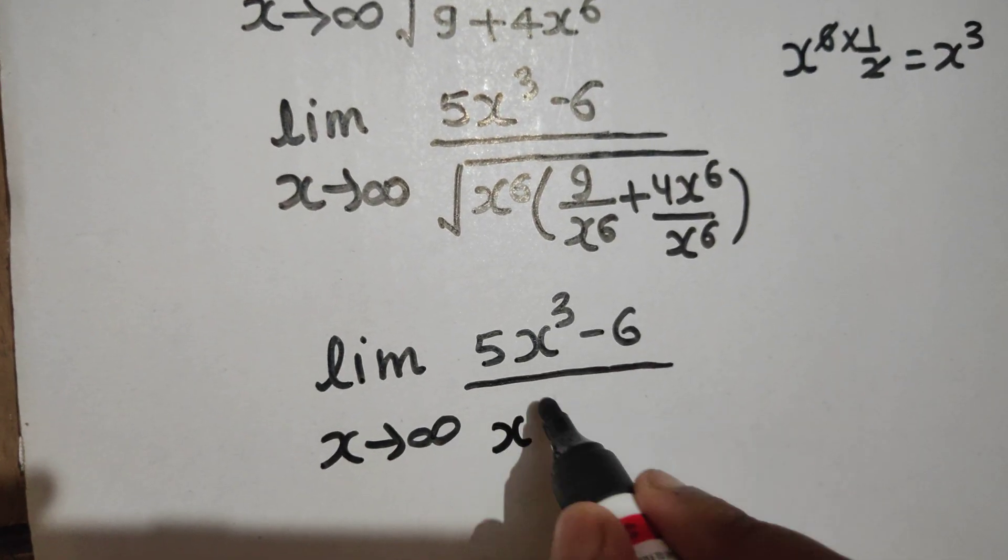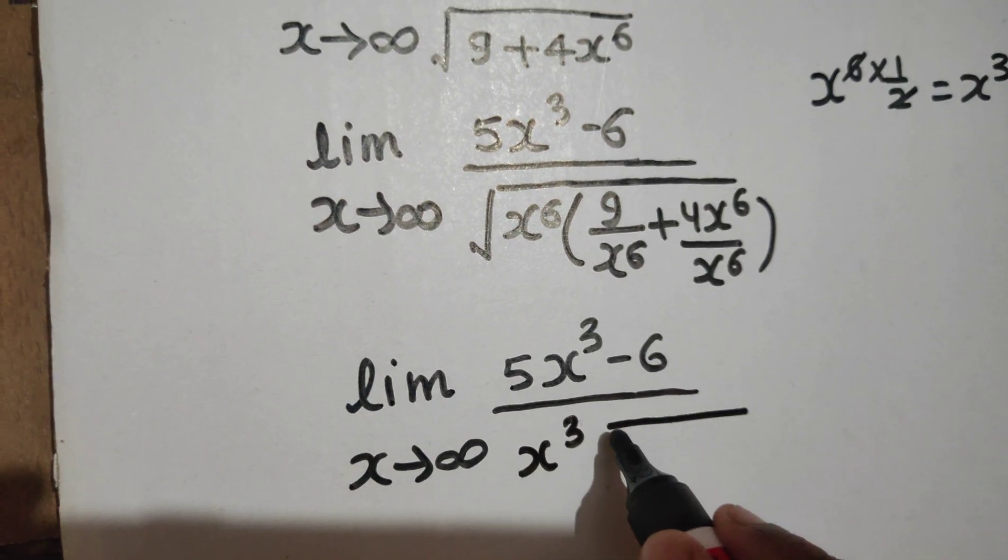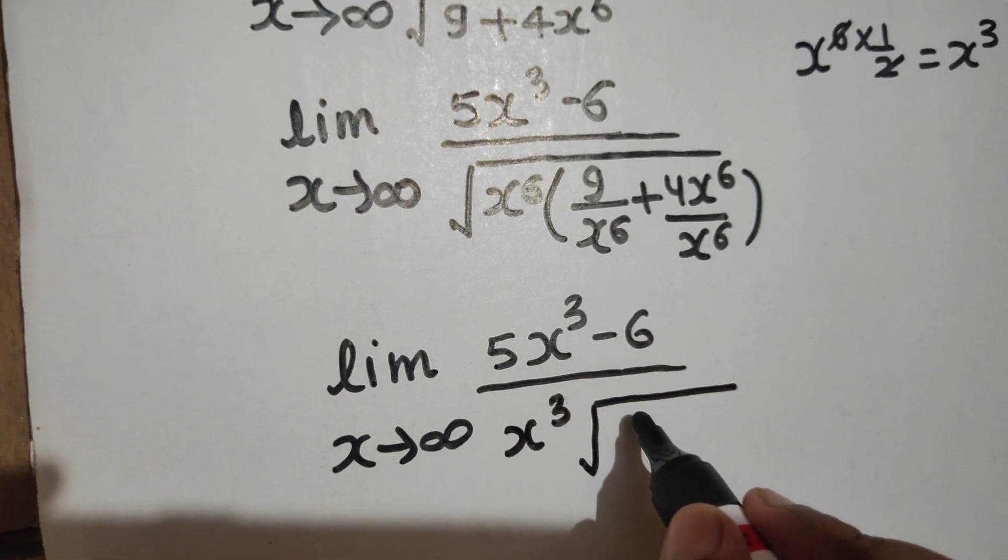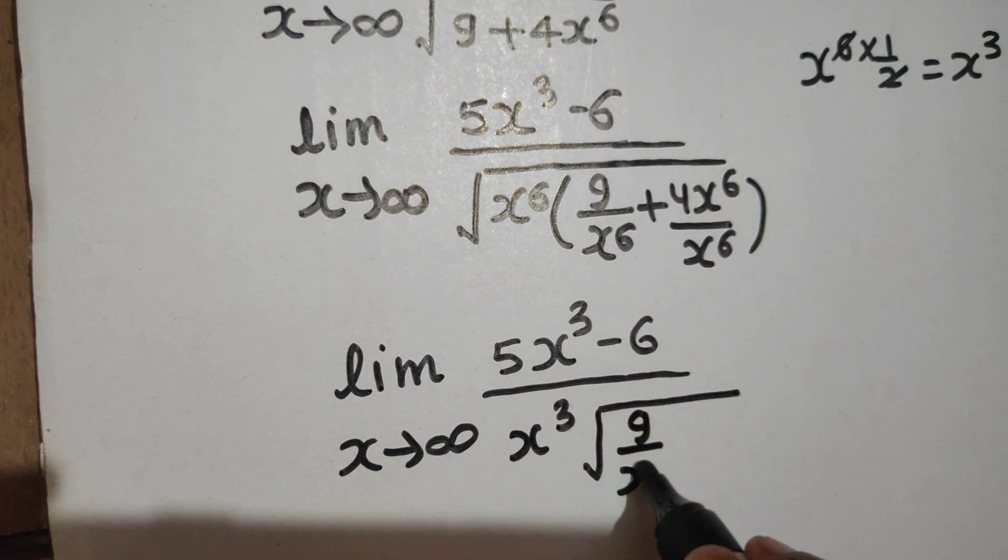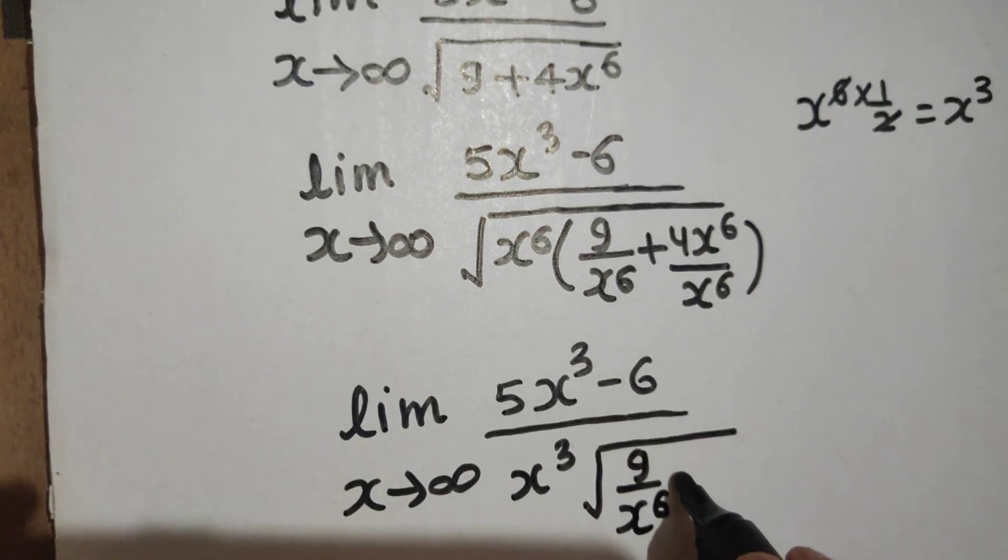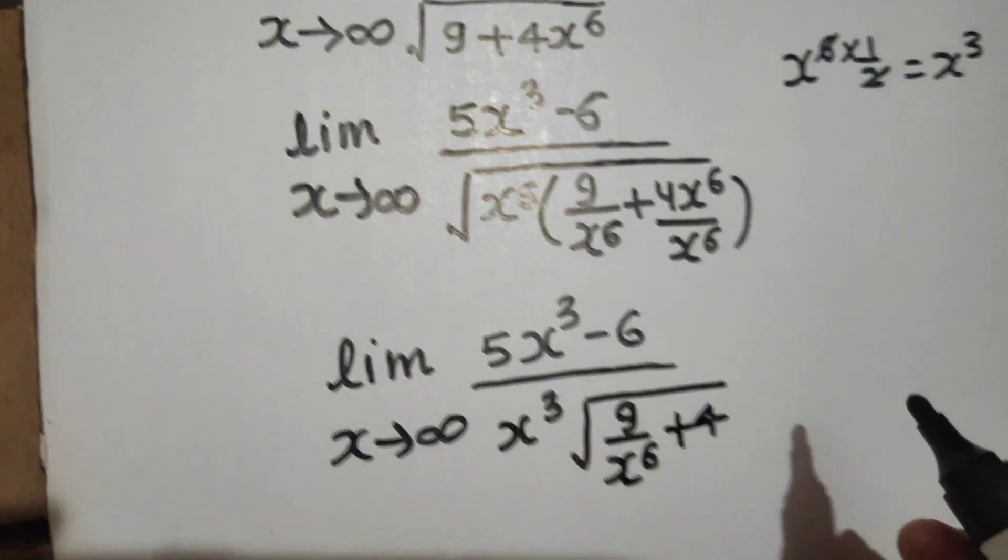Because this you can cancel out for the next step. Now this x³ can be divided with both the terms of the numerator.